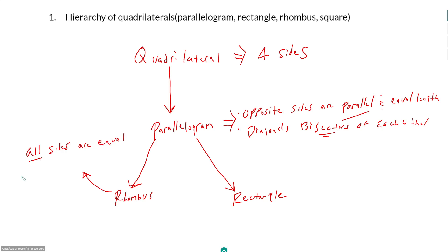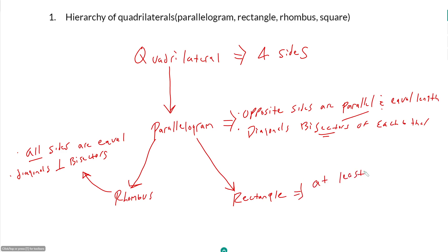You also know your diagonals are perpendicular bisectors of each other for a rhombus. Just like before, both of these things are true about any rhombus. However, to get from a parallelogram to a rhombus, we only need to know one of these things, because the other will necessarily follow. To get a parallelogram that is a rectangle, we just need to know it has at least one angle that is 90 degrees.